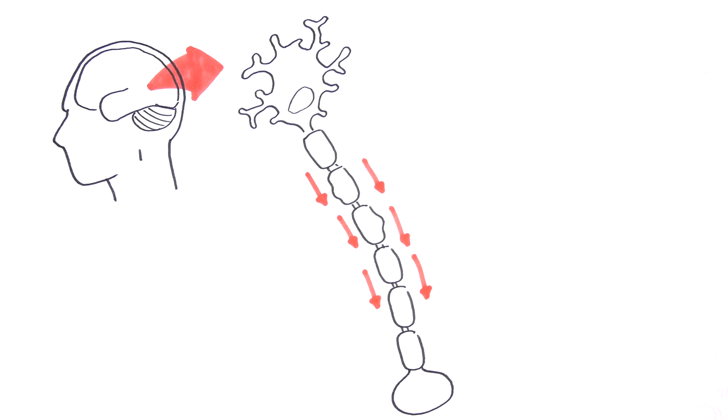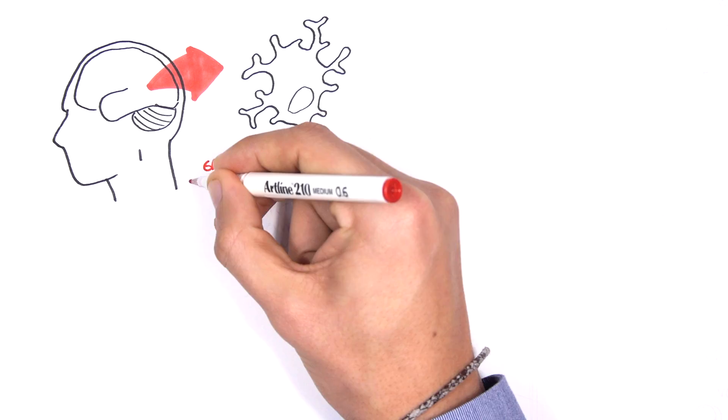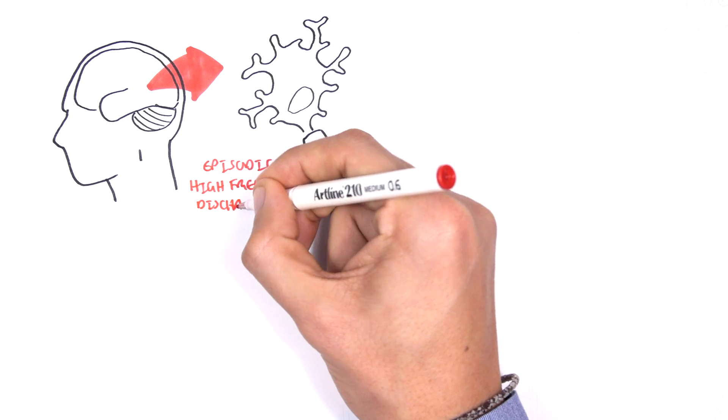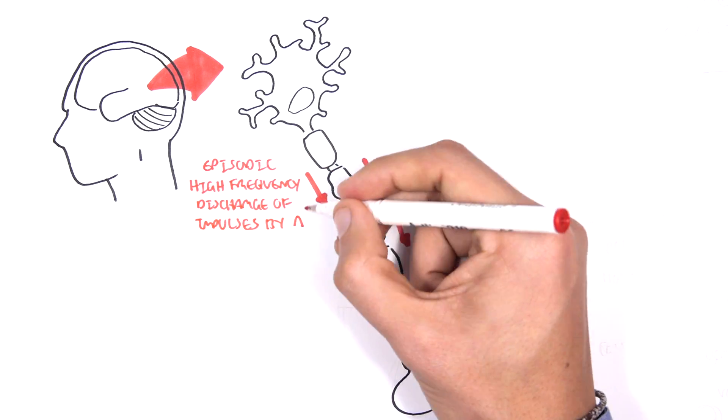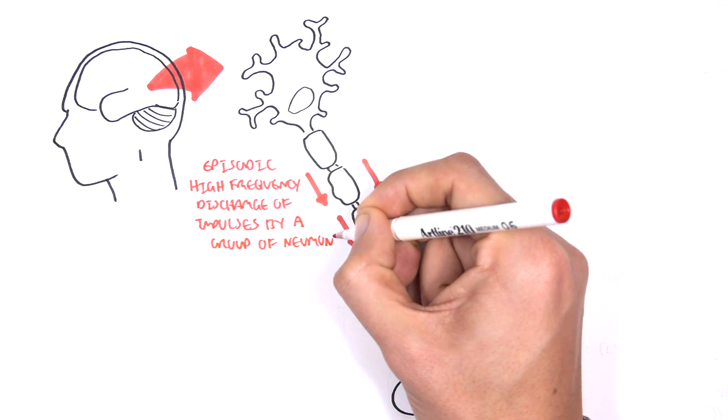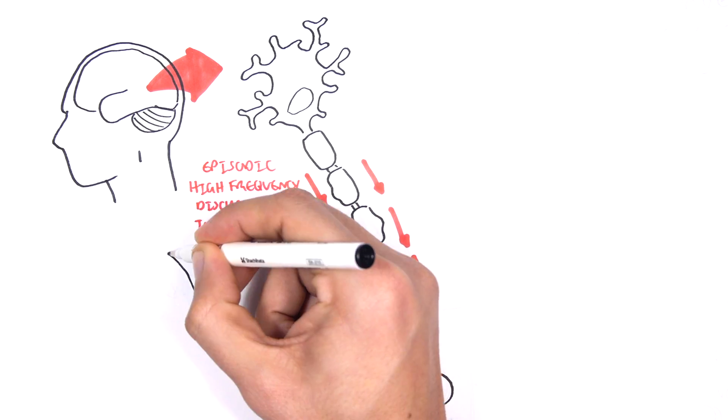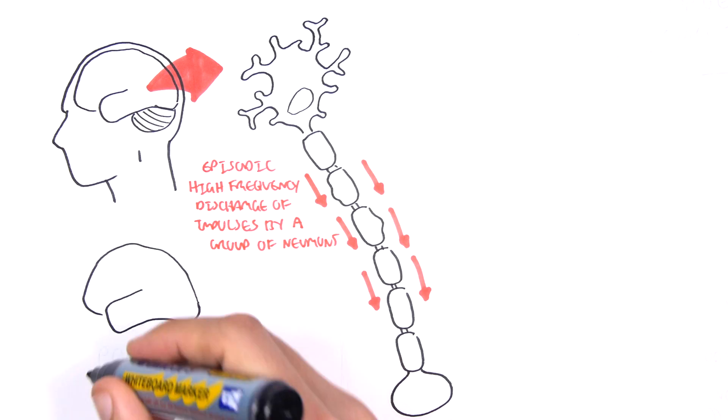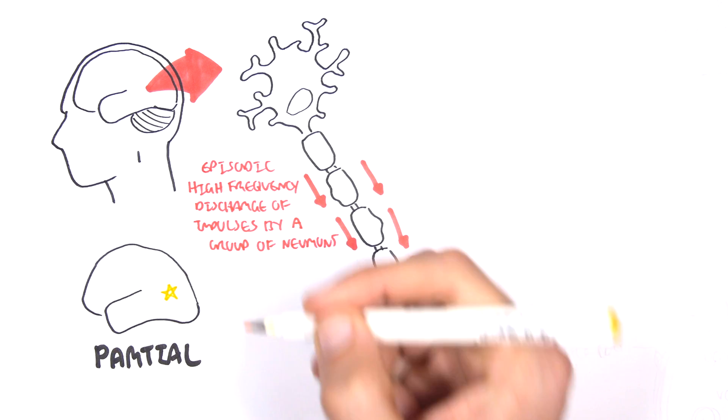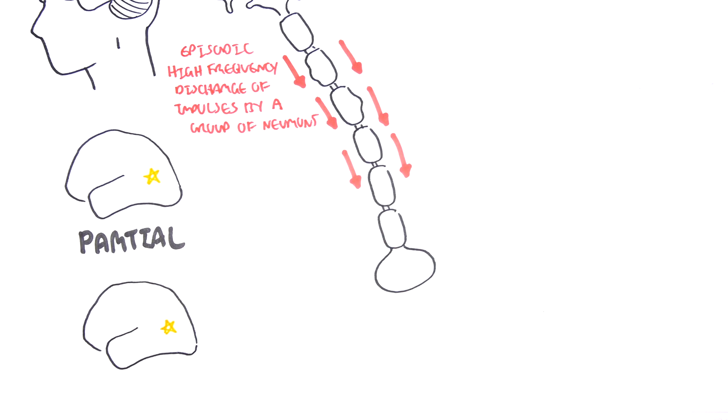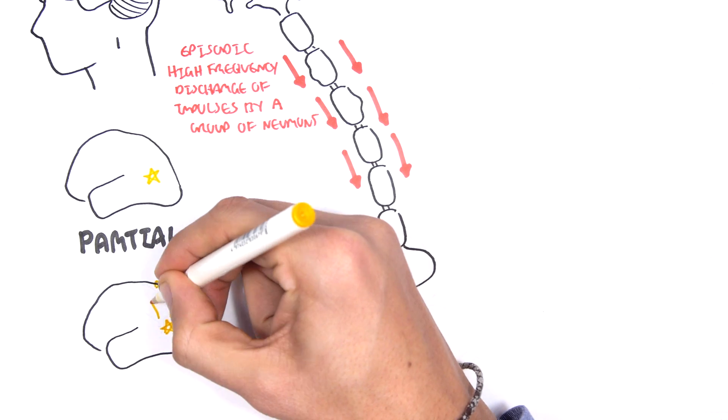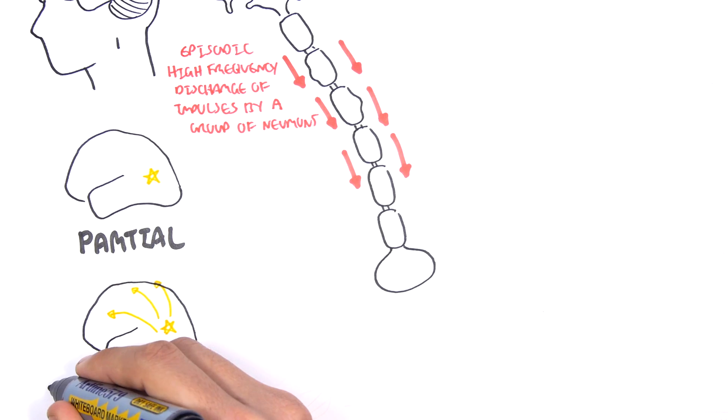I'm drawing the brain, which is made up of cells known as neurons. In epilepsy, you have episodic high-frequency discharge of impulses by a group of neurons. It can be localized in one part of the brain, creating a partial seizure, or it can start local and then spread throughout the brain, which is known as a generalized seizure.